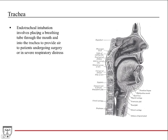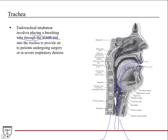Very common clinically is endotracheal intubation. If someone undergoes general anesthesia, that's how their breathing is maintained while they're put to sleep. It involves placing a breathing tube through the mouth and into the trachea to provide air to patients undergoing surgery, or if someone is in severe respiratory distress. The tube is inserted in the mouth, threaded down through the pharynx, into the larynx, then down into the trachea, just before the lungs, to provide air to both lungs.